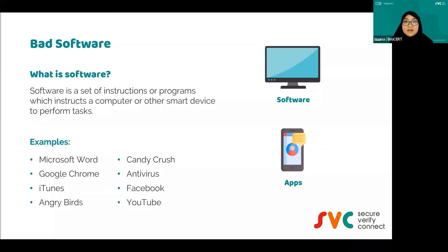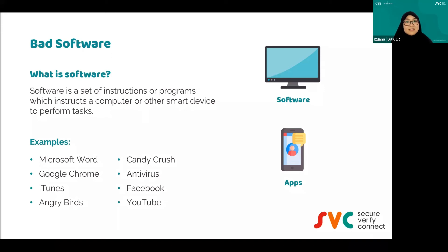Examples of software include Microsoft Word, Google Chrome, iTunes, even Angry Birds — that is an app, a gaming app, and still considered software. Candy Crush, antivirus — if you install it, it's considered software — even Facebook app or YouTube app. Bad software is basically something that you install to your devices but it has bad intention, basically.